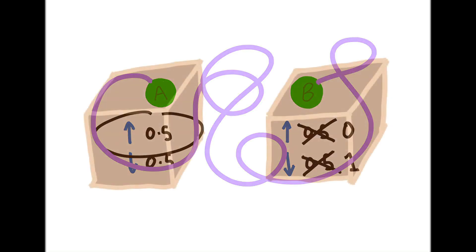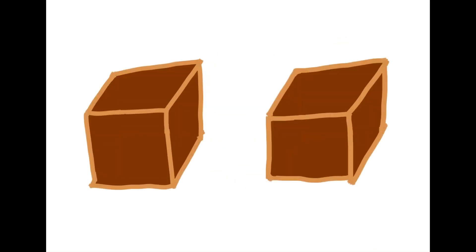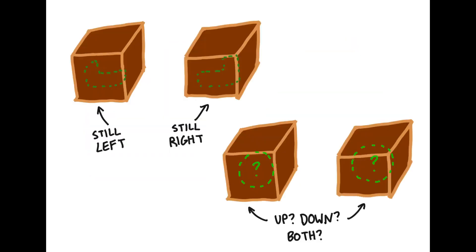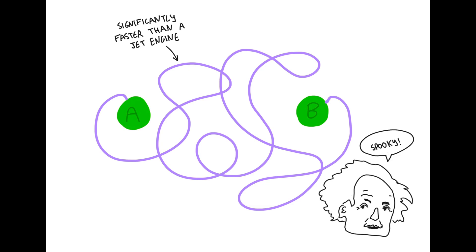This itself does not seem particularly impressive. After all, the same effect can be observed with a pair of shoes hidden in boxes — if one box contains the left shoe, the other must contain the right. But this analogy is not actually applicable, because the left-right quality of the shoe is determined before opening any box. In contrast, quantum physics dictates that a particle does not have a distinct property until a measurement is made. In other words, only when electron A's spin is measured to be up does electron B's spin become down.